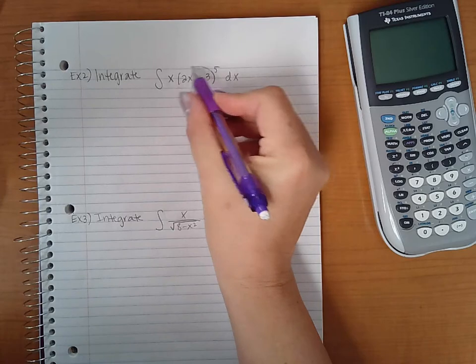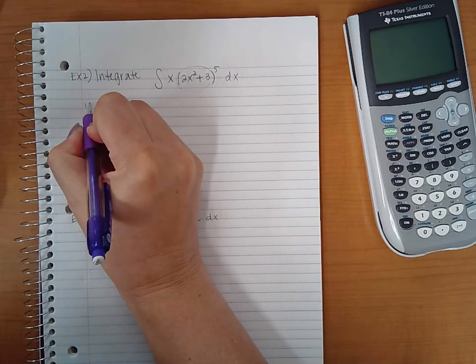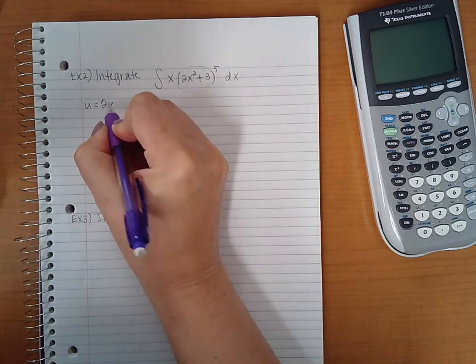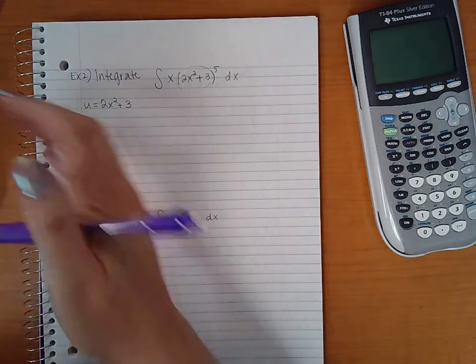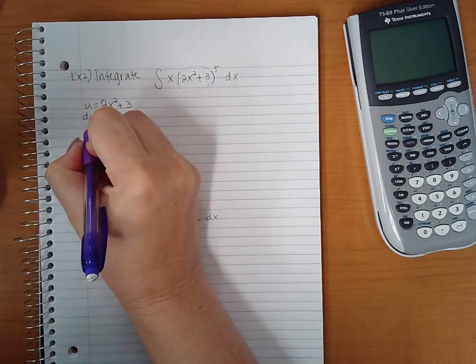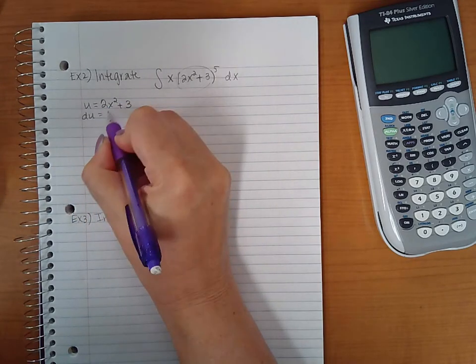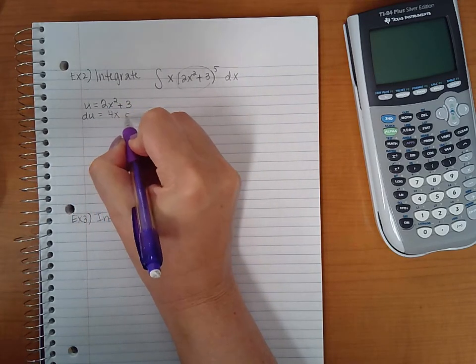So since this is inside parentheses, I'm going to say that is u. And then if I want to find du, I need to take the derivative of this, which would be 4x dx.